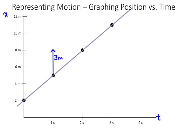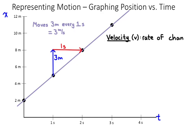Like in this particular case, it moves 3 meters, forward 3 meters, in 1 second. And we could get that same description of moving 3 meters every 1 second or 3 meters per second. That quantity, meters per second, has a fancy physics name. It's called velocity.